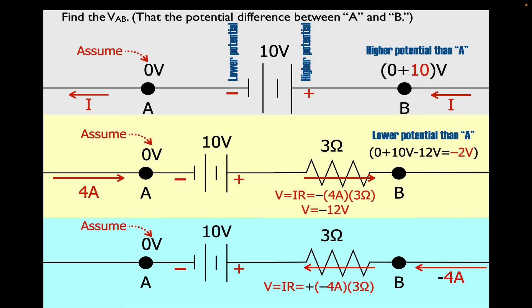When you're solving a circuit and finding directions and you get a negative value, the negative sign means the opposite of the direction you assumed. Don't go back and make any corrections on the circuit, on the math, or on the answer of negative 4 — leave them and use them in calculations as-is. So V equals IR: that's positive negative 4 amps times 3 ohms, which gives me negative 12 volts. Adding up the potential differences between A and B: 0 plus 10 plus negative 12 equals negative 2. A is at zero, B is at negative 2, so A is the higher potential and B is the lower potential.